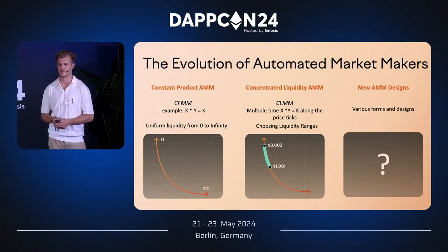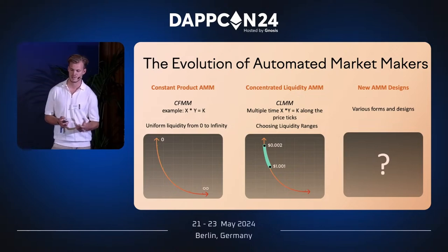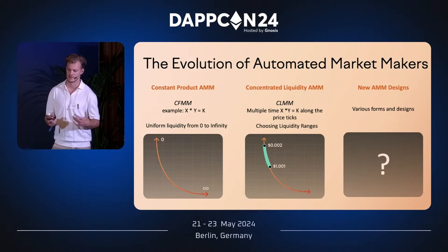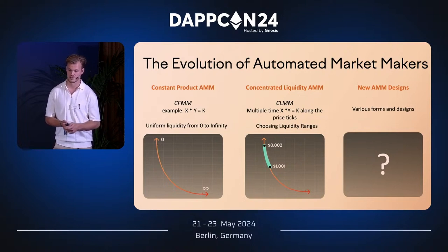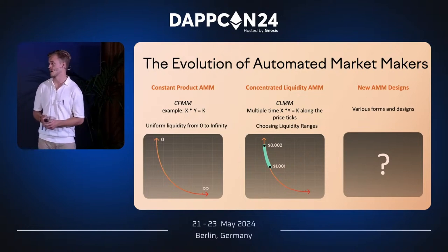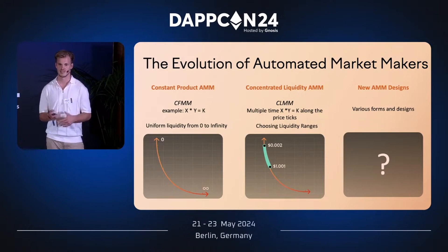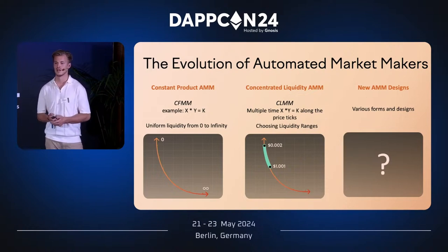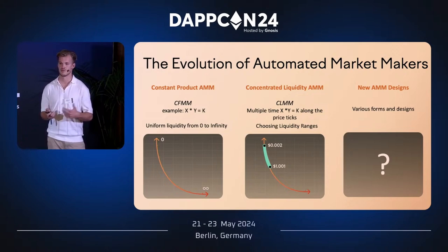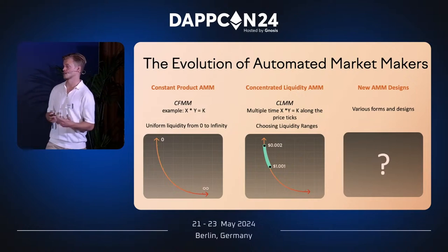This led to the development of concentrated liquidity AMMs. Uniswap v3 was one of the first, allowing you to provide liquidity within specific price ranges and rebalance those ranges — much more capital efficient. However, as a liquidity provider in a concentrated liquidity AMM you still face impermanent loss, also called LVR. If the inventory you provide changes in price due to volatility, you face losses, and your trading fees must exceed those losses. Many new AMM designs try to reduce LVR, and HOT goes in that direction.